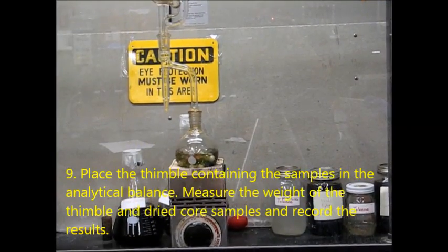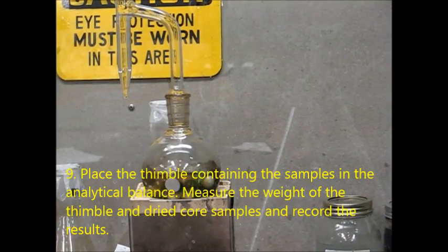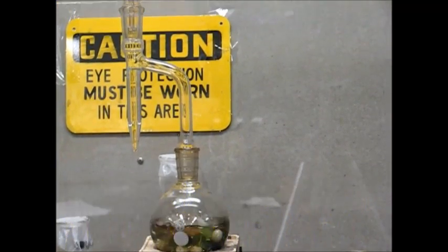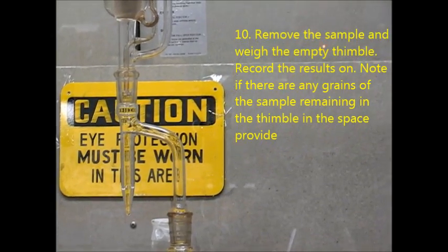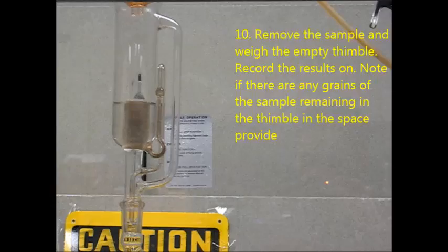Place the thimble containing the sample on the balance. Measure the weight of the thimble and the dried core sample and record the results. Remove the sample and then weigh the empty thimble and record the results. Note if there are any grains of sample remaining in the thimble in the space provided.